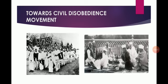Plantation workers also joined the movement. They participated with the hope that they would be free to move in and out of the confined space in which they had been enclosed. Those working in tea gardens were not allowed to move anywhere or go to their homes — they were forced to live in that workplace. They wanted the freedom of movement. They hoped that Gandhi Raj was coming and everyone would be given land in their own villages. So everyone joined the movement with different hopes and aspirations.